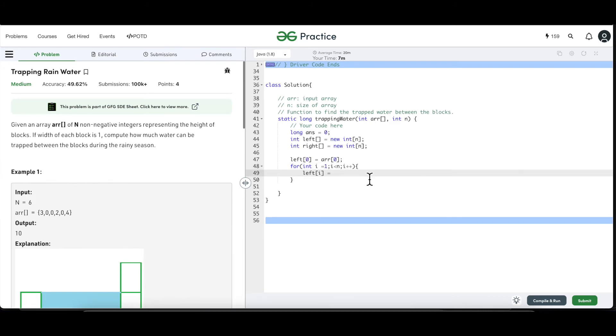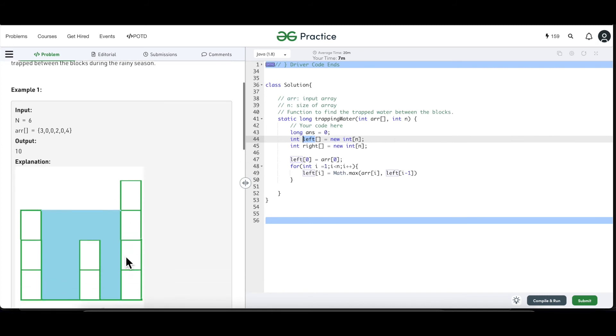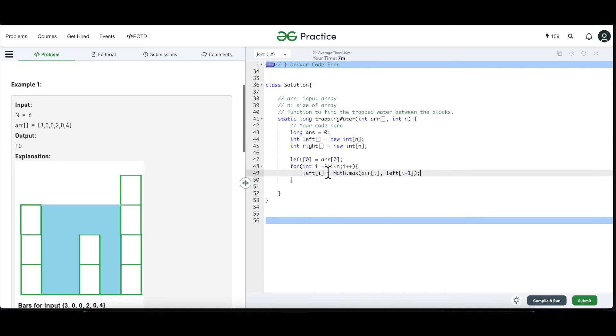So the element that is going to be stored at the ith index of the left array is going to be a max of the current element that is ARR of i and the initial element which is already stored in the left array, which is i minus 1th element, just the immediate previous element. If the current element is greater than the immediate previous element means the current element becomes the current max. It will discard because what we are doing is starting from left side, we are initializing at every index of this left array. We're initializing at every index, what is the maximum block? What is maximum height of the block so far? Initially it is 3, but when we reach here, now the maximum becomes 4. So that is what we are trying to do over here.